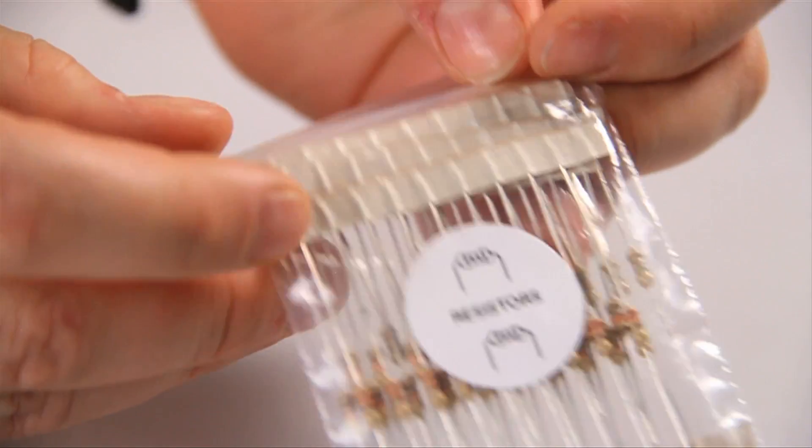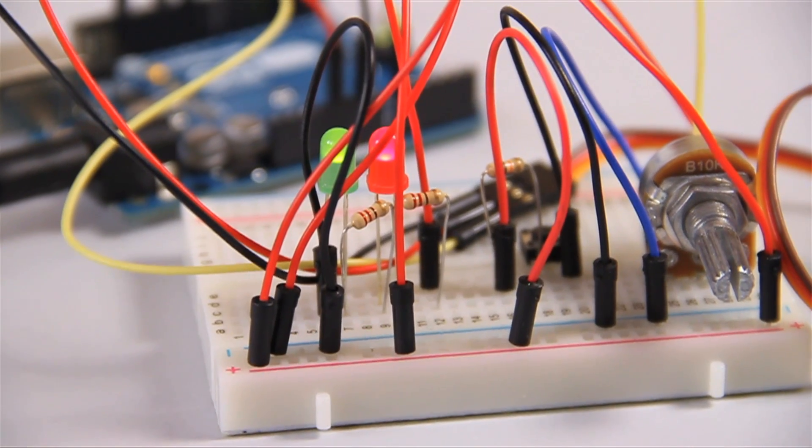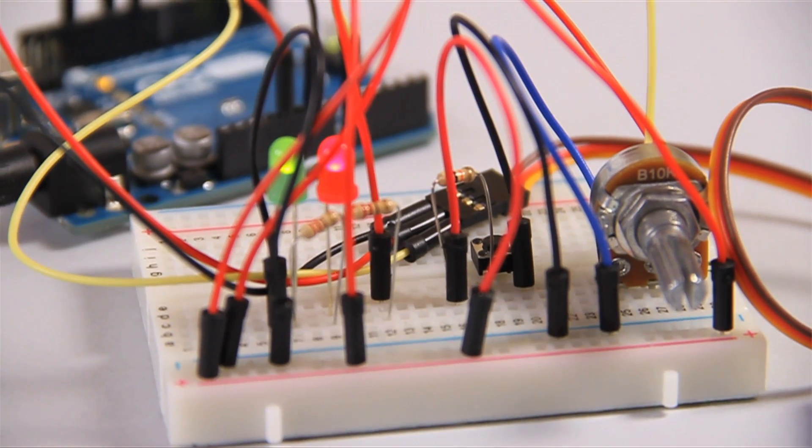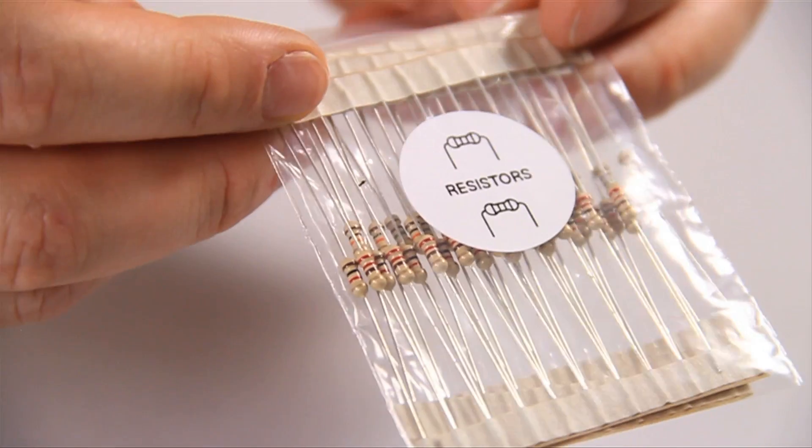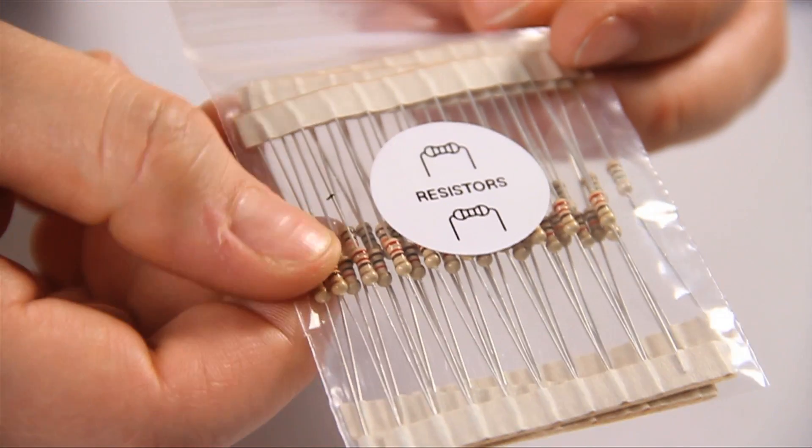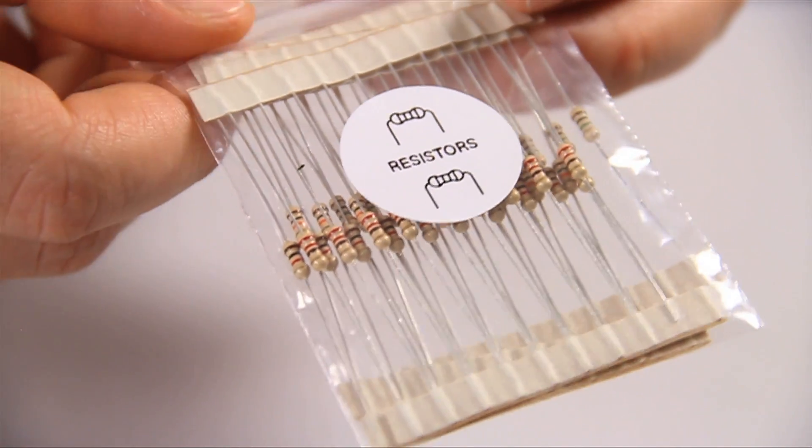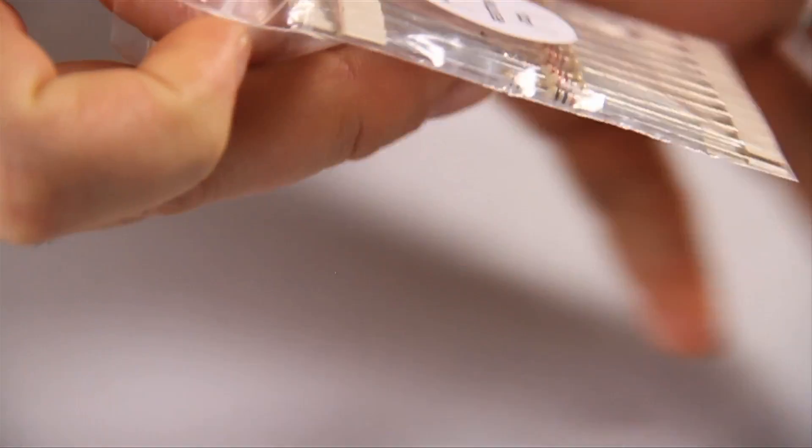These are your resistors. There's lots of different types. Resistors are used in a circuit to reduce the flow of electrical current and at the same time lower the voltage. Different components are measured in different units. So resistors are measured in ohms. You have 40 resistors in total, which are split into four groups of different values. So let's have a look at those different values.